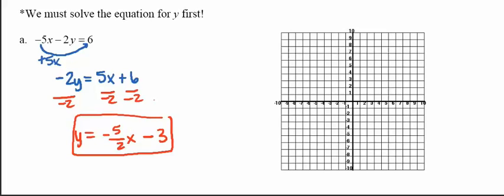So this is the slope-intercept form of the equation. The slope is negative 5 halves, and the y-intercept is 0, negative 3.